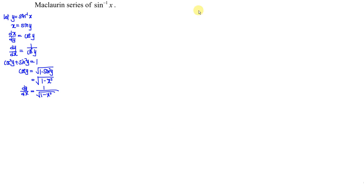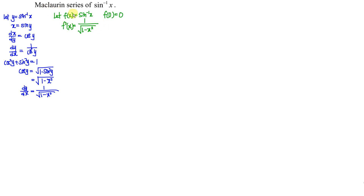Next, we let f(x) be equal to sine inverse x. At the point x equal to 0, f(0) equals 0. So when we differentiate, we should obtain 1 over the square root of 1 minus x squared. If we use the conventional method to obtain the Maclaurin series, we will realize this is quite complicated.